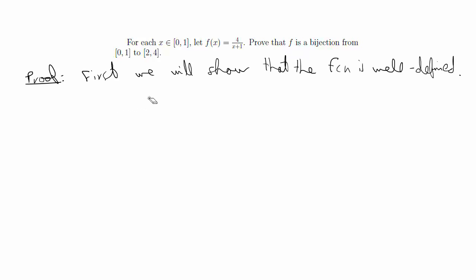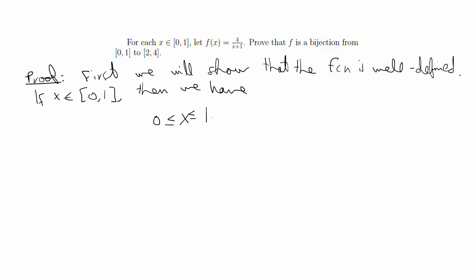To begin the proof we have to prove the function is well-defined. We need to show that for the given domain x ∈ [0,1], f maps to [2,4]. So we start by stating x ∈ [0,1], and then we manipulate this inequality until it looks like 4/(x+1), which is f(x), proving that f(x) maps into [2,4]. We'll first add 1 and then take the reciprocal.